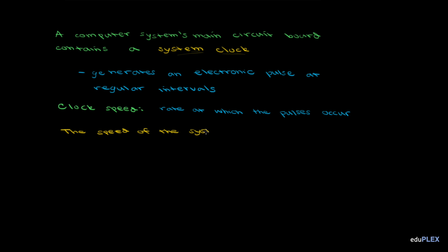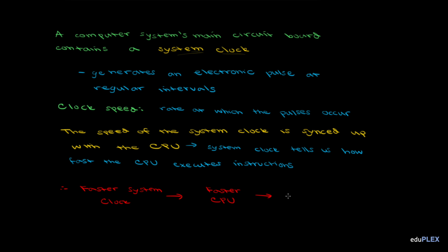The speed of the system clock is synced up with the CPU, meaning that the system clock tells us how fast the CPU executes instructions. The computer's overall performance is based on the CPU's speed, which is in turn based on the frequency of the system clock, so a faster system clock means a faster CPU, which means better performance.